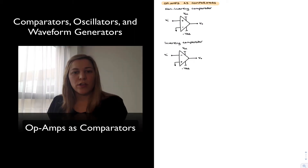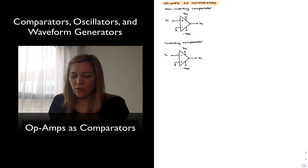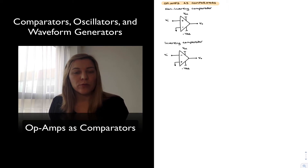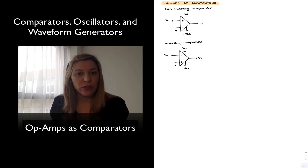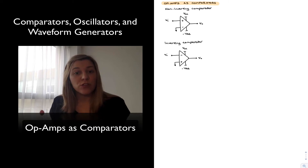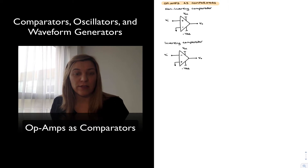Hello. Let's talk about the operation of op-amps as comparators. We can connect a traditional op-amp to be used as a comparator by simply operating it in an open-loop configuration and using the two saturation levels — positive and negative saturation — as the high and low output levels.